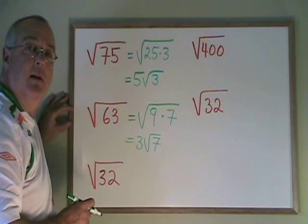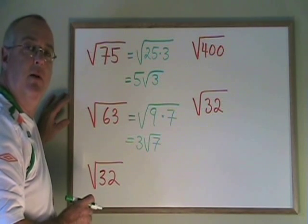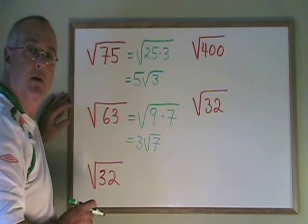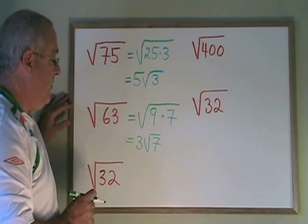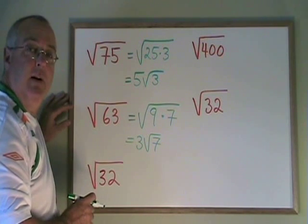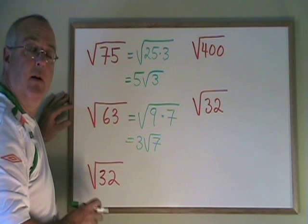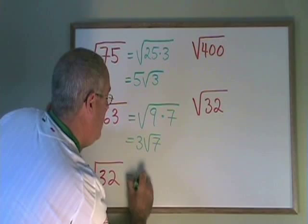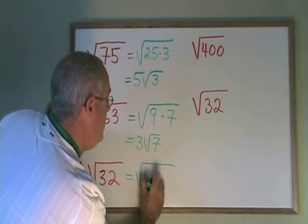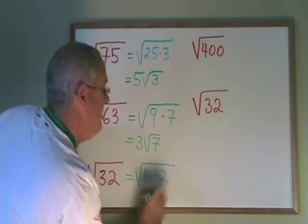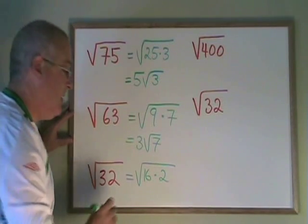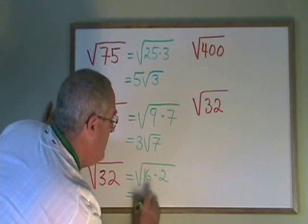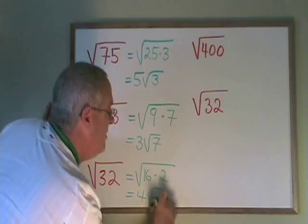32 is a number where you have to be a little more careful because 32 has more than one factor that is a square. 32 has 4 as a factor, but it also has 16. The largest factor of 32 that is a square is 16. So we write 16 times 2. And since the square root of 16 is 4, this becomes 4 root 2.